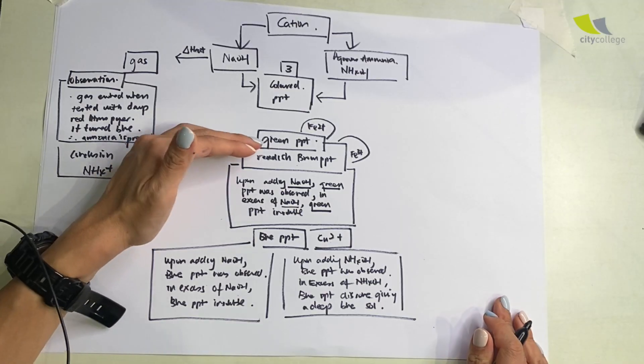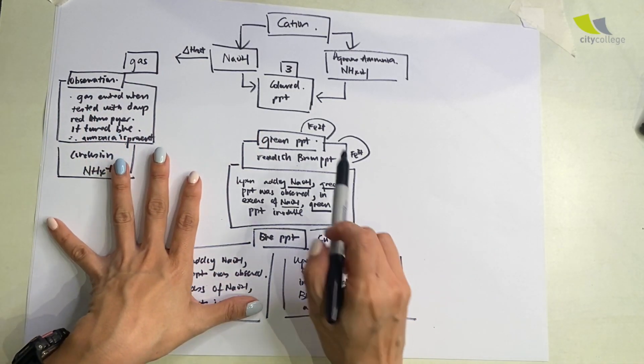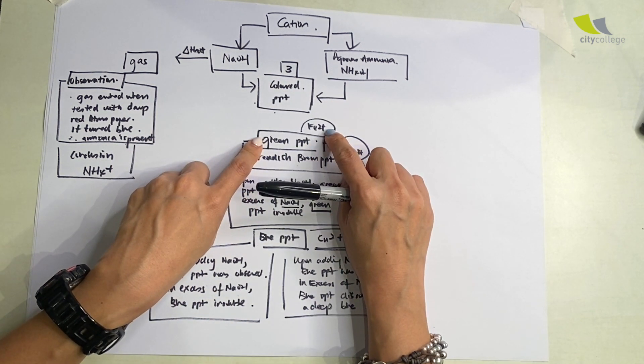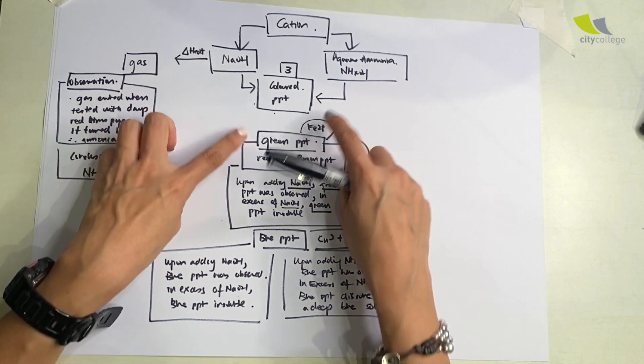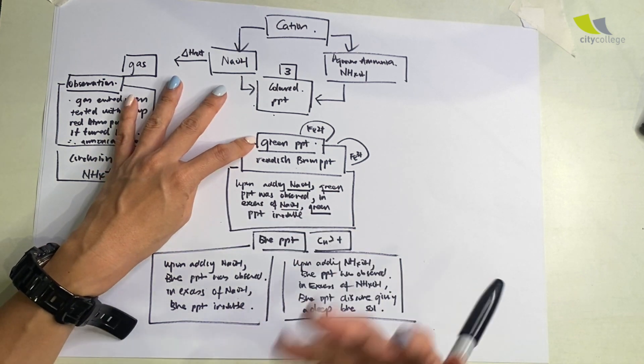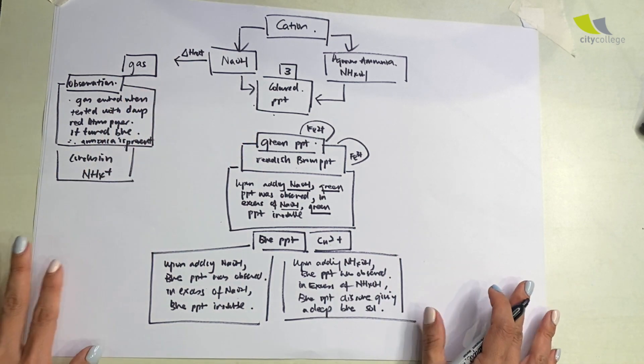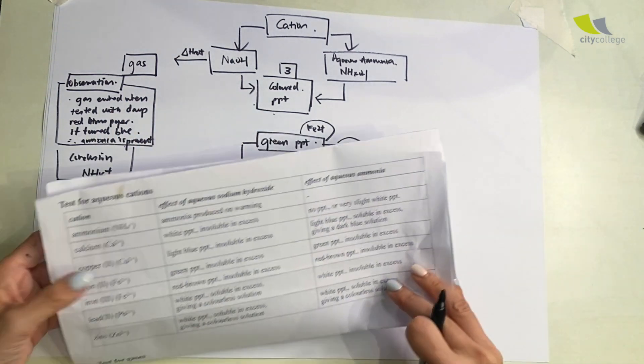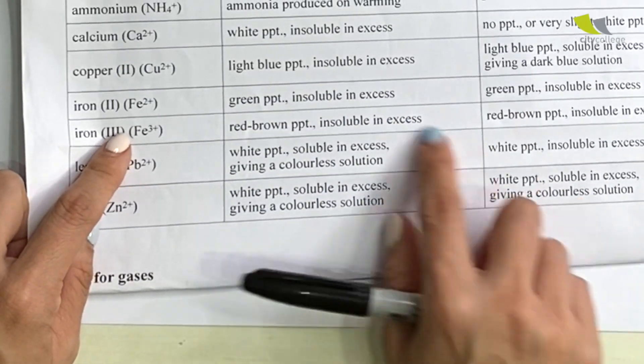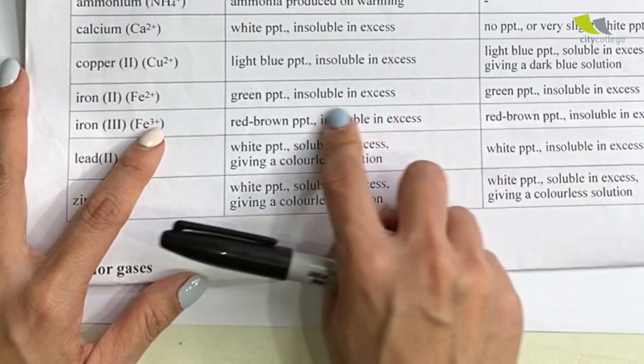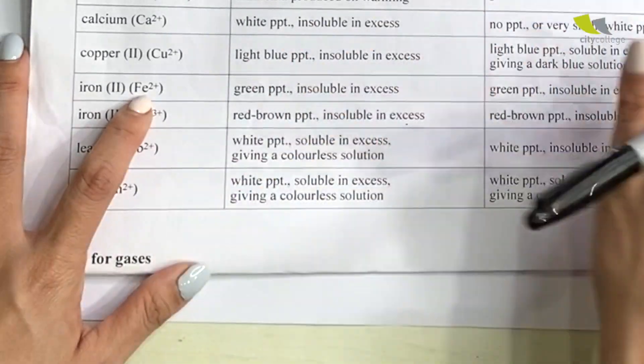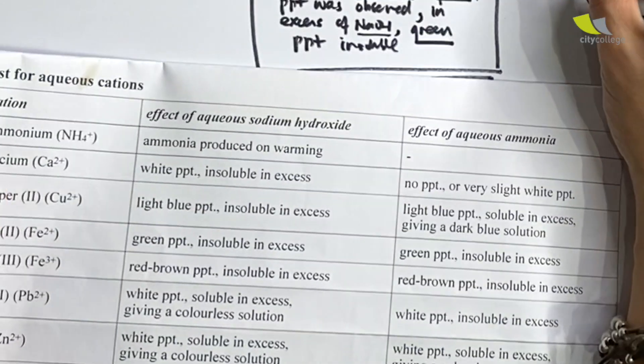As you can see, for the colored one it's very obvious. Every time you see green, you can conclude that Fe2+ is present upon adding NaOH or NH4OH. The moment you add a little bit of NaOH and you see a dirty green or green precipitate, you do not need to worry and then add some more to further confirm. According to the QA notes, you can see very clearly green precipitate insoluble in excess.